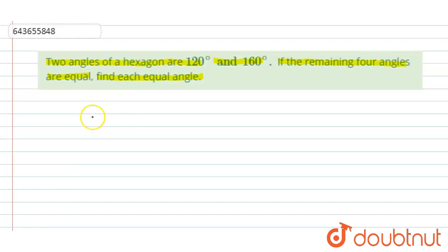So first of all, we will use one formula to find the sum of angles in this hexagon. The formula is: sum of all interior angles in a polygon is given by n minus 2 into 180 degrees. Now this is a case of hexagon. So in case of hexagon, we know that the number of sides are 6.